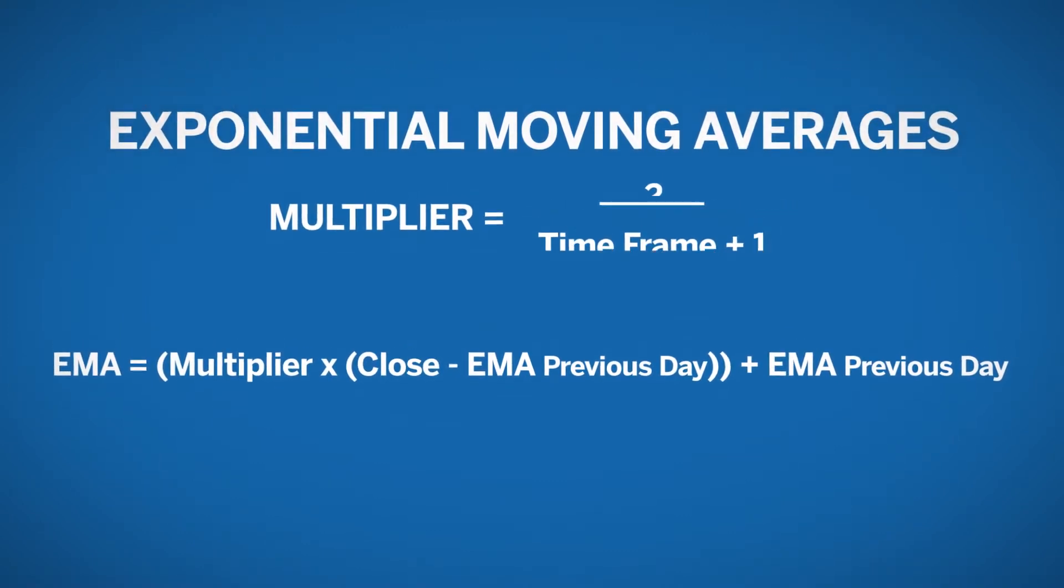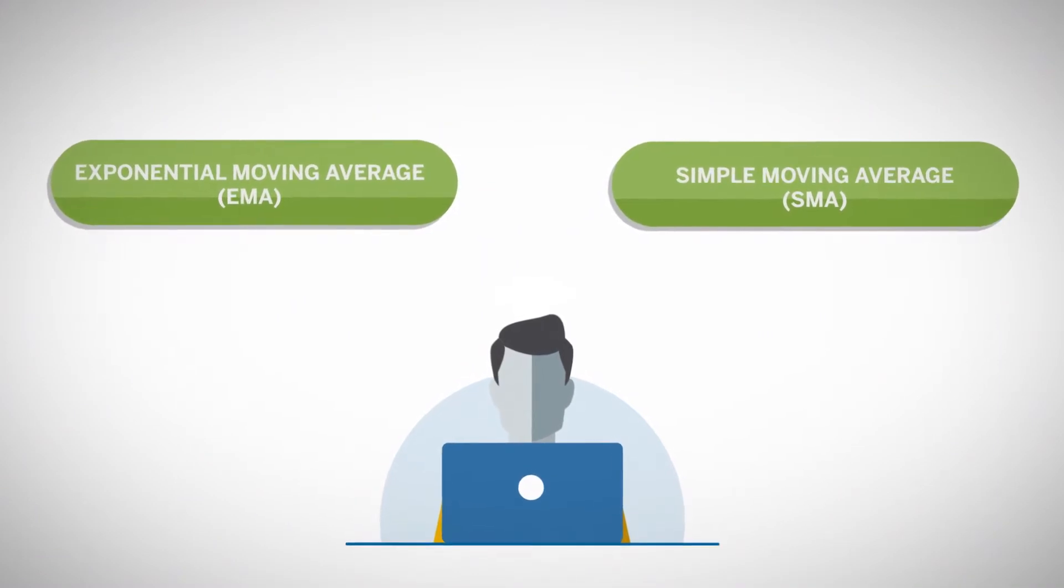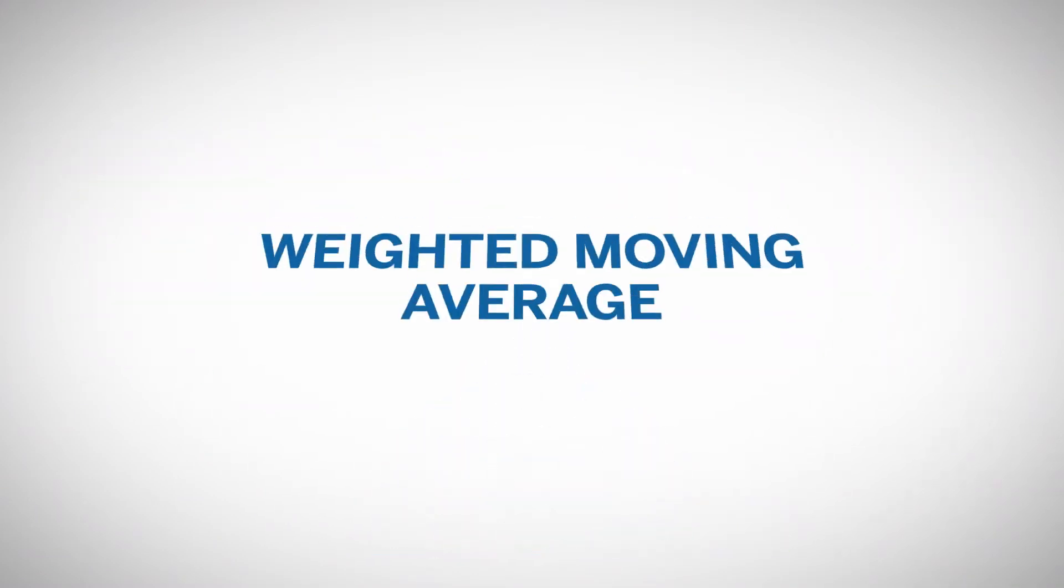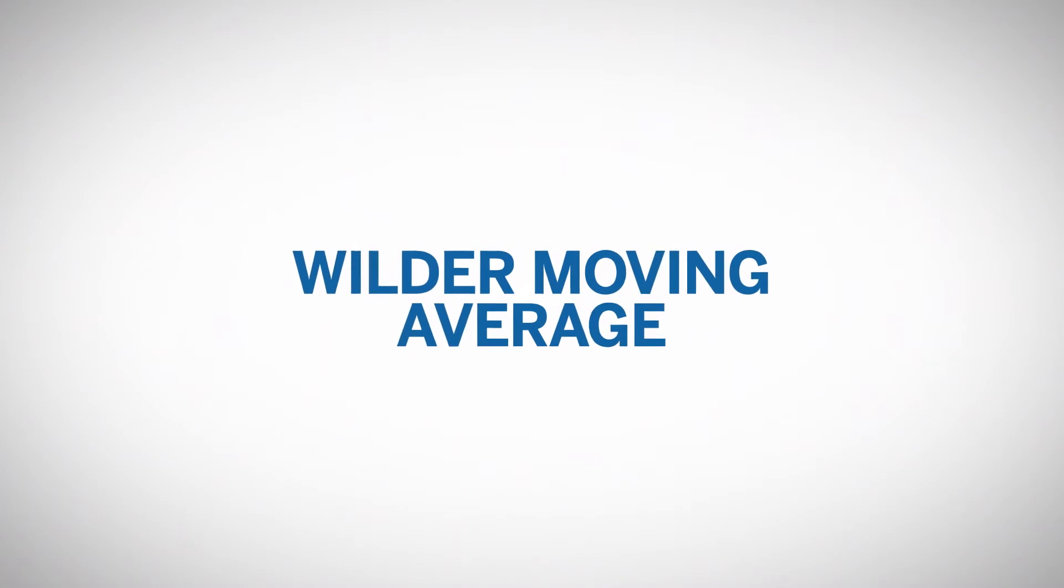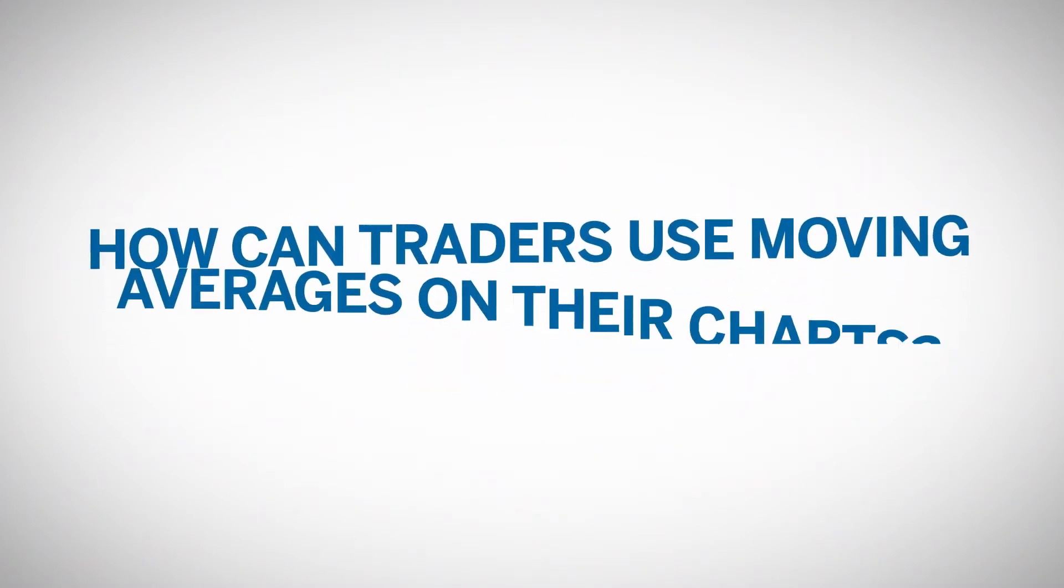While there are other more complicated moving average calculations beyond EMA and SMA, these two are the most common. Other moving averages are basically an EMA that assigns different weighting and smoothing variables to the calculations.